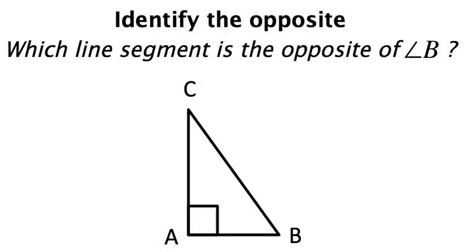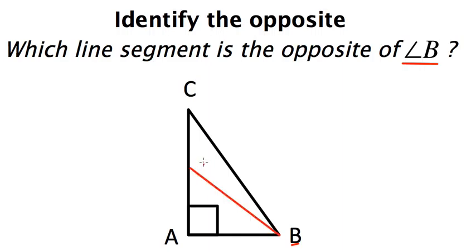This problem is asking us to find which line segment is opposite angle B. So first I find angle B right here, and then I draw a line from angle B to the side that's as far away from it as possible. In this case, this side right here. And that side is going to be my opposite.